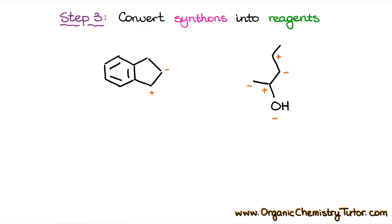For instance, if we have a plus charge on the carbon like over here, then what we are looking at is some sort of an electrophile. So that carbon ideally should have maybe a halogen or some sort of a leaving group sitting on it, or maybe it can be a carbonyl like an aldehyde or a ketone or a carboxylic acid derivative.